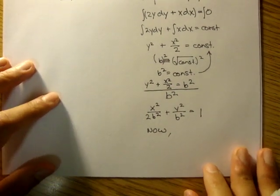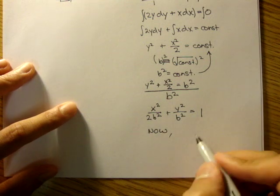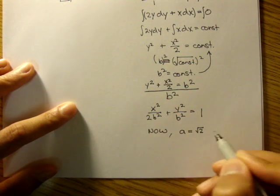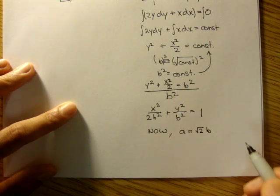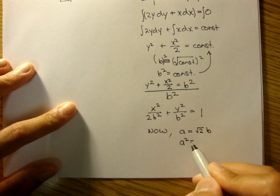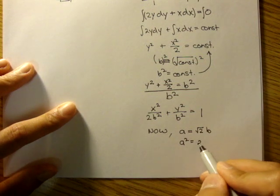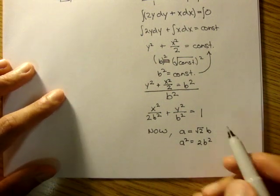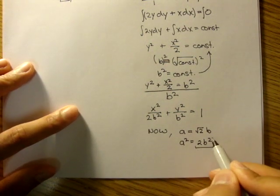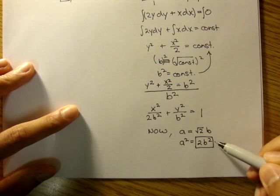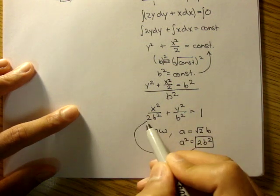Now, let's define another variable. Let's let a equal the square root of 2 times b. Now, if we squared both of these, we'll get a squared is equal to 2b squared.